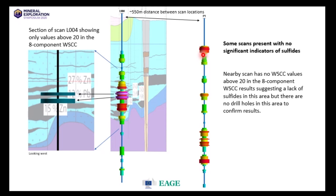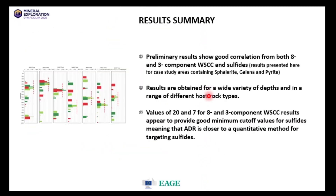In summary, the preliminary results show good correlation between eight and three component sulfide criteria. We've shown case studies for sphalerite, galena, and pyrite, with results obtained across a wide variety of depths and different rock types. This technique doesn't require any drilling or prior knowledge of rock types — it's completely host rock independent, only picking up on sulfides in the subsurface. We're currently using values of 20 and seven for the eight and three component criteria respectively, though that may change with access to more case studies.